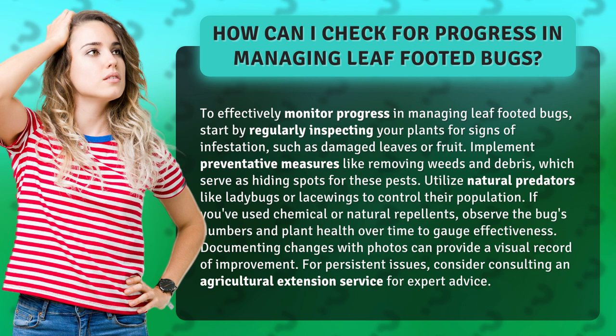Utilize natural predators like ladybugs or lacewings to control their population. If you've used chemical or natural repellents, observe the bugs' numbers and plant health over time to gauge effectiveness.